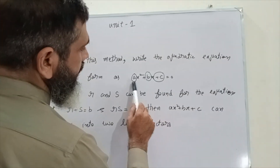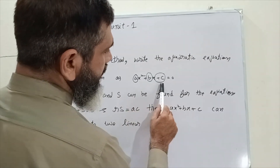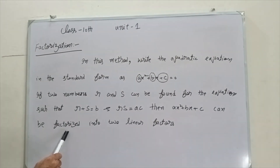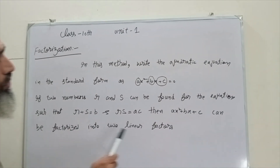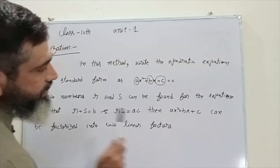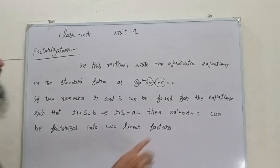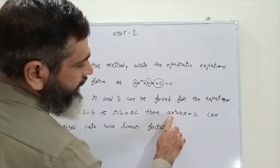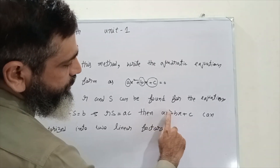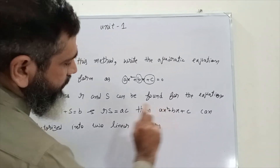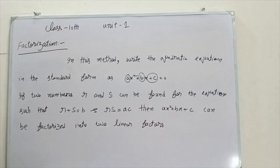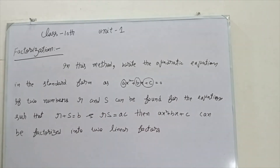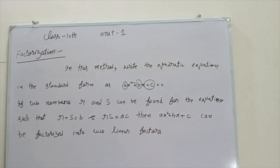Then ax² plus bx plus c can be factorized into two linear factors. Linear factors mean the power of x is 1, and we will find two values of x.